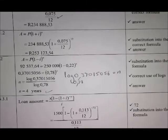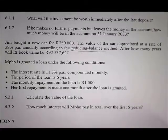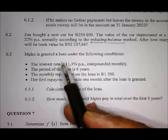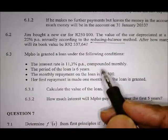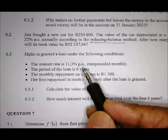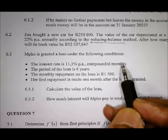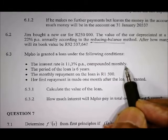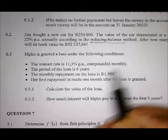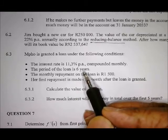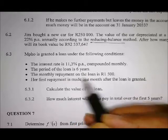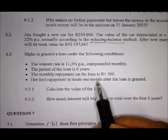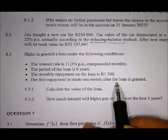Then the next question, 6.3. Mpho is granted a loan under the following conditions. The interest rate is 11.3% per annum compounded monthly. So immediately, compounded monthly must make you think. This is most probably an annuity. The loan period is 6 years. Monthly repayments is 1,500. His first repayment is made one month after the loan is granted. So remember that now. One month after.